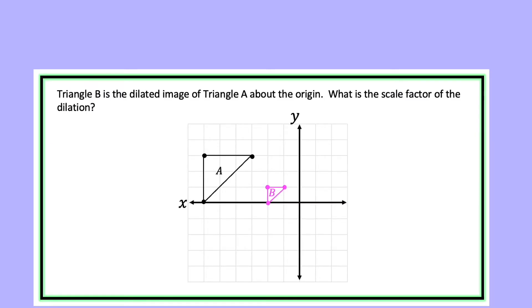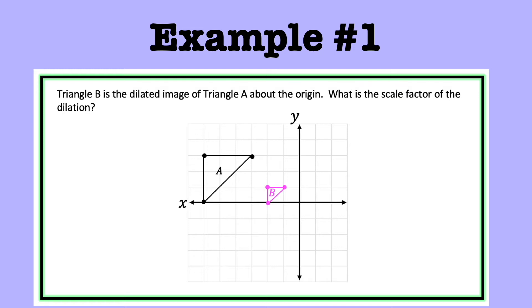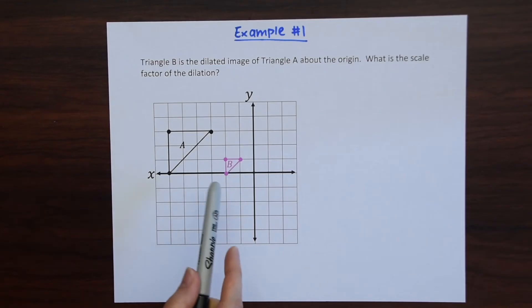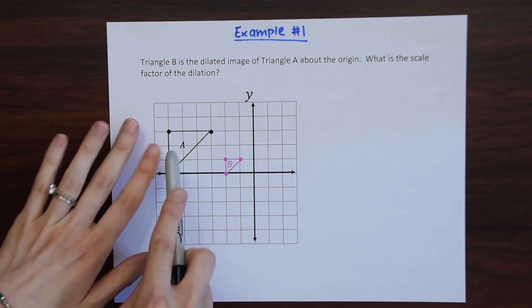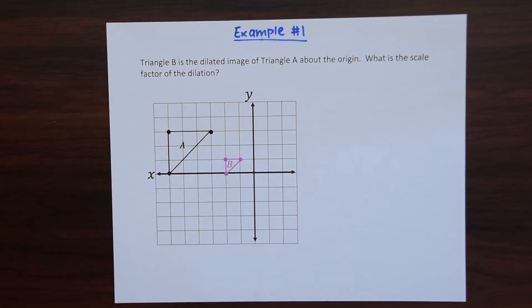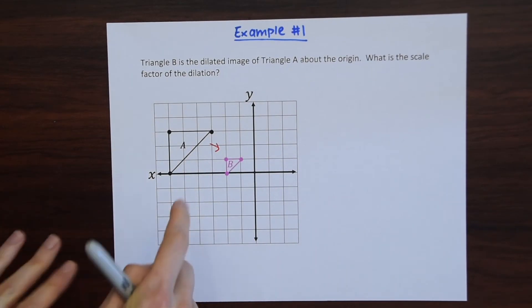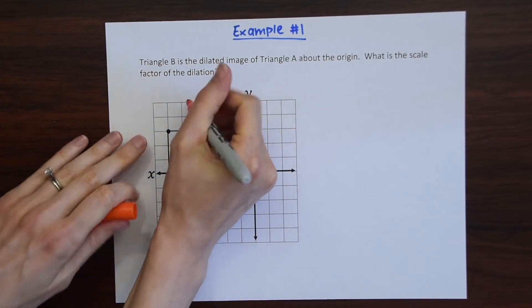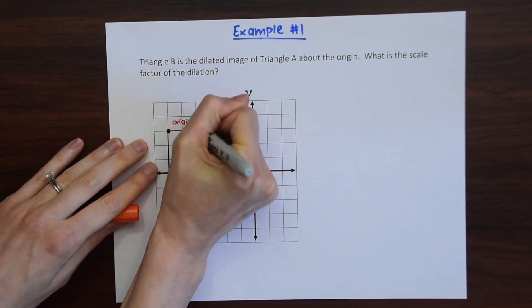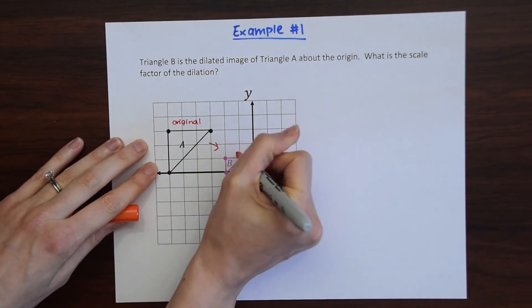So here we have example number one. Triangle B is the dilated image of triangle A about the origin. What is the scale factor of the dilation? So here we have triangle A and we're saying that it was dilated to become triangle B. So we went from A to B. So we know that this is the original triangle and then this is after dilation.